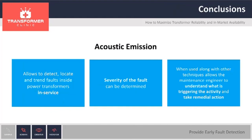Acoustic emission allows you to detect, locate, and trend faults in power transformers with equipment in service. With the grading system, we can give you an idea of the severity of the fault, backed up by 1,500 tests in our database. The main benefit is providing maintenance engineers with a better understanding of what is triggering the acoustic activity, which may help to provide steps to remedy that problem.